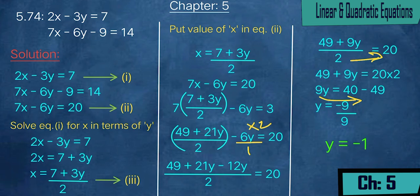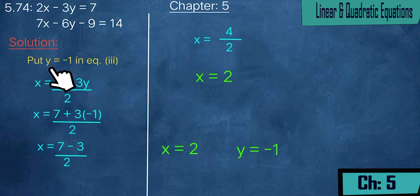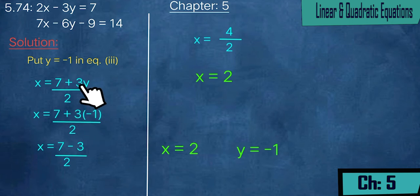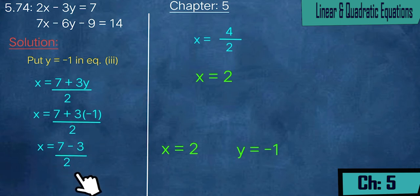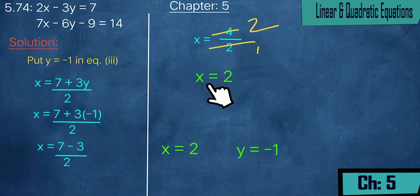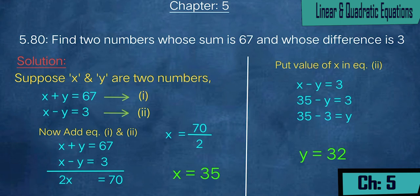Now putting y = -1 into equation 3: x = (7 + 3(-1))/2 = (7 - 3)/2 = 4/2 = 2. So x = 2 and y = -1.